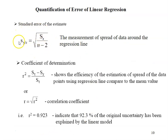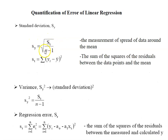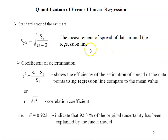The highlight of the quantification of error is what we call the standard error of the estimate. This is the measurement of the spread of data around the regression line — or in simpler terms, it is the standard deviation for the regression line. So sy is the standard deviation for the data around the mean, while the standard error of the estimate is the standard deviation of the data around the regression line.